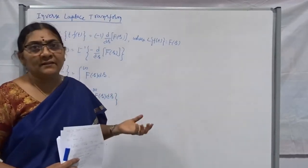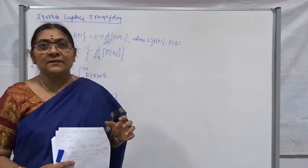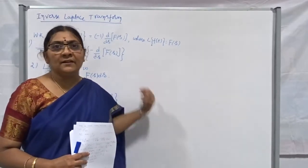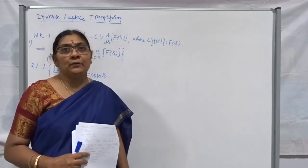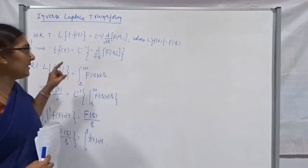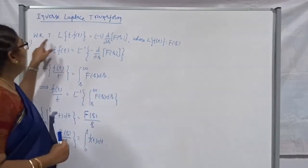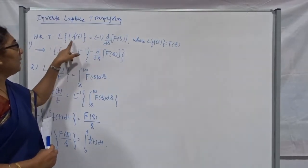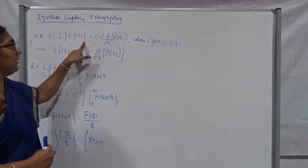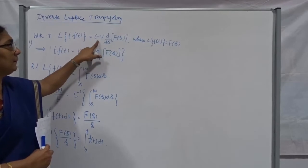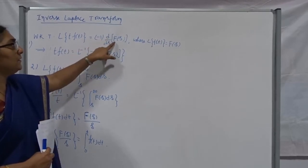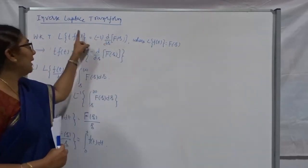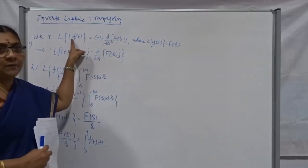What we discussed in the last 3 classes is not sufficient to find out the inverse transform. Therefore, we may consider some more results. We already know from the Laplace transform class that the Laplace transform of t·f(t) is nothing but minus 1 times the 1st derivative of F(s), where F(s) is the Laplace transform of f(t).